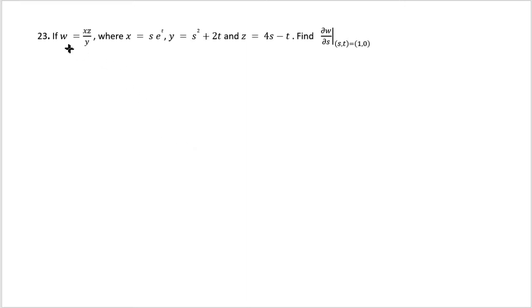So you have w as a function of x, y, and z, and x, y, and z being functions of t. And the question is, what is the derivative of w with respect to s at s and t being 1, 0?